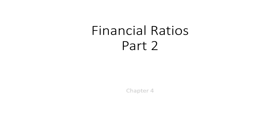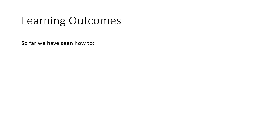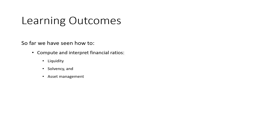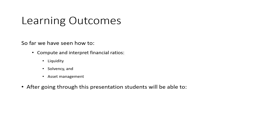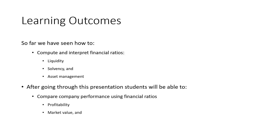Financial ratios part 2, chapter 4. After having gone through how to prepare balance sheet, income statement, common size balance sheet, common size income statement, and the key ratios such as liquidity ratios — talking about current obligations of a company — solvency ratios covering debt obligations both current and long-term, as well as asset management ratios on how a company manages its inventory and receivables, this presentation will now focus on performance ratios such as profitability and market value ratios.